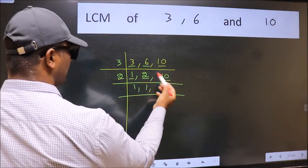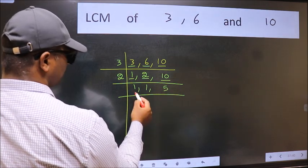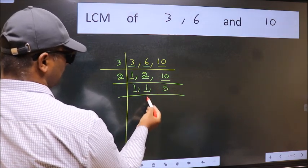The other number 10. When do we get 10 in 2 table? 2 times 5 is 10. Now we got 1 here and here.